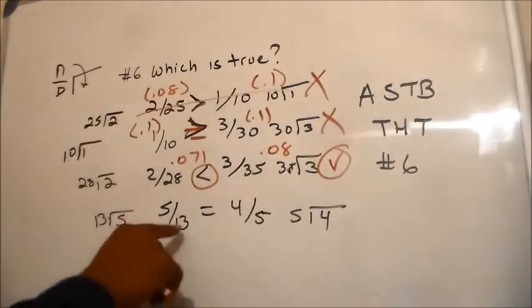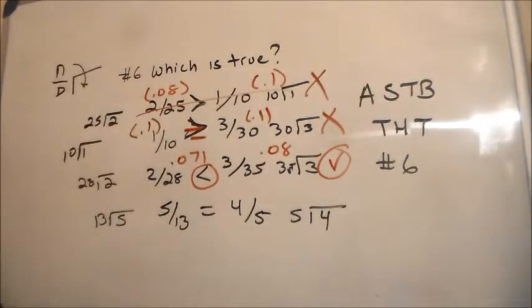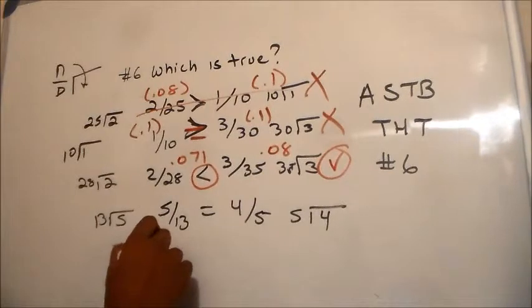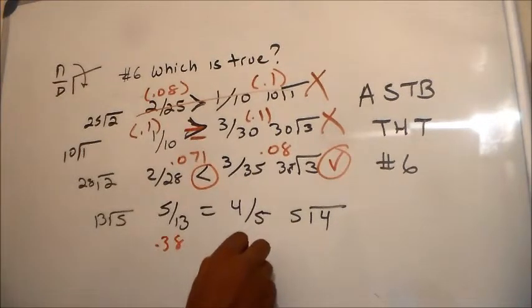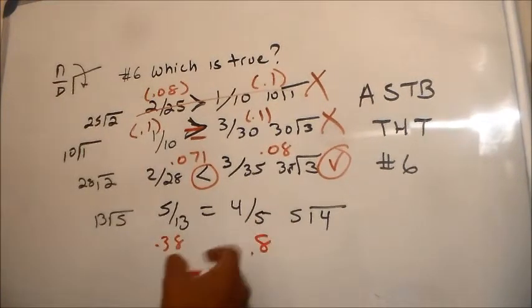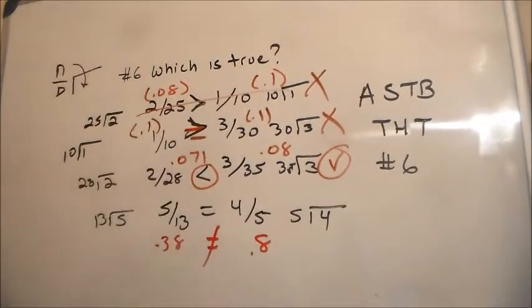Alright, and then 5 divided by 13 is point 3 8. And 4 divided by 5 is point 8. So point 8 is not equal to point 3 8. So C is our answer. So if you're not very good at fractions, I showed you an alternate way to solve this problem and get the points. That's what it's all about - points.